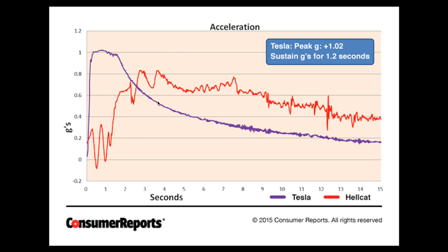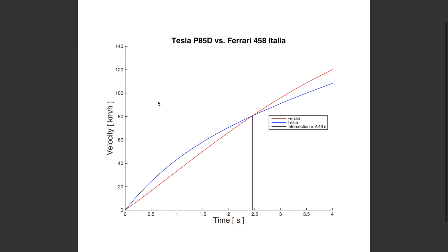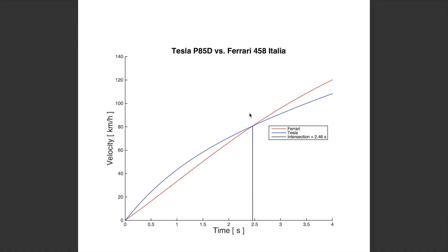Let's look at an actual example. I have taken data from the internet for two different cars: the electric car is the Tesla P85D and the petrol-driven car is a Ferrari 458 Italia. These cars are both very fast, but the Ferrari is faster from 0 to 100 — it does it in about 3.2 seconds, while the Tesla does it in about three and a half seconds. The blue line is the Tesla, and this graph shows velocity — how fast the car is going — plotted against time.